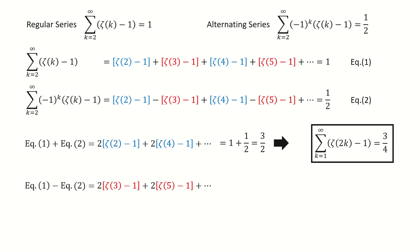Next, we take the subtraction of these two equations, so all the blue terms cancel out, and we're left with 2 times all the red terms, and it equals 1 half. Then we divide 2 on both sides, so we got the result for the odd term series, which is equal to 1 over 4.